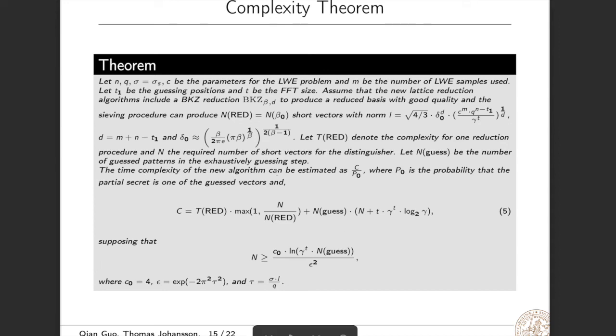So now we can present the main complexity theorem. We see that the time complexity of the new algorithm can be estimated as C/P_0, where P_0 is the probability that the partial secret is one of the guessed vectors. We can see that C consists of two parts. This part is from lattice reduction and this part is from guess and FFT. So we see that these two parts are additive. But here, guess and FFT can reduce the volume by a factor of q^t1 times gamma^t. So this is why this algorithm can outperform the previous dual attacks. Here the sample complexity is estimated by this formula, and gamma^t times N_guess is the number of hypotheses. So this formula is from information theory for hypothesis testing. We set c_0 to be 4, which will be experimentally verified later.